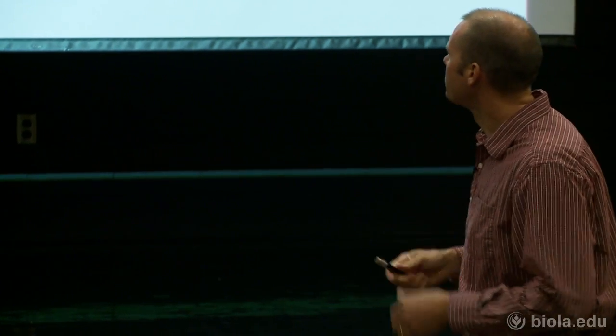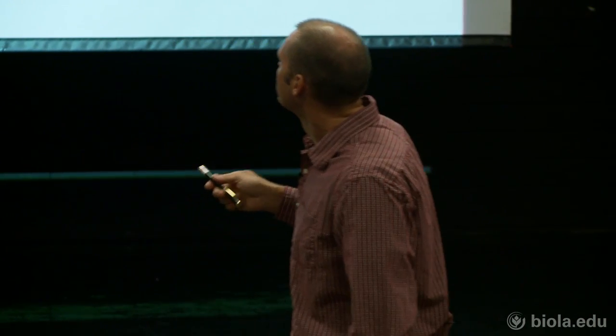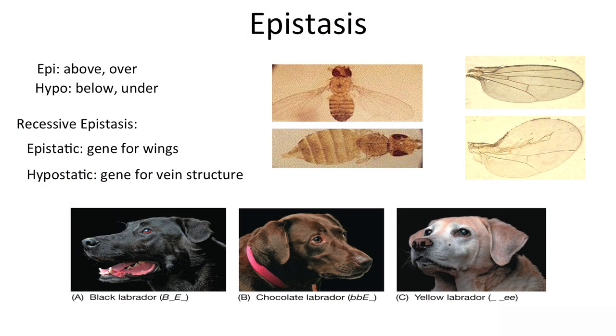This is recessive epistasis. The recessive allele of the epistatic gene — when it's recessive — is going to hide the other one. If you're recessive, you hide the other. There also is dominant epistasis, and we'll go through that in a second.